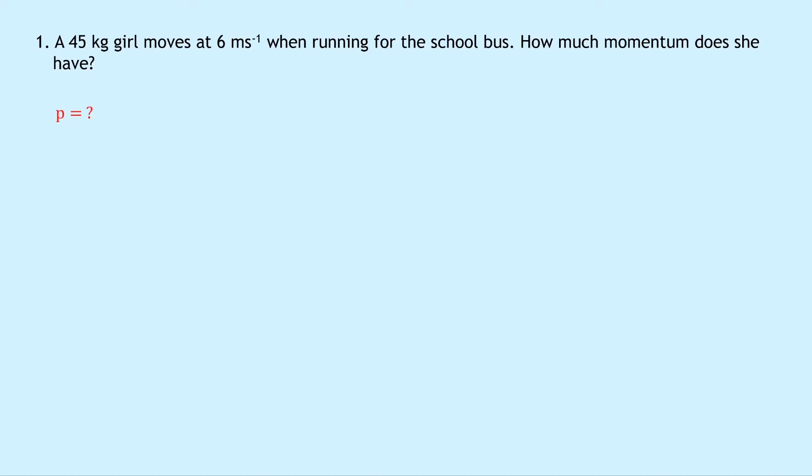Well, writing down what we know from the question, we know the momentum is what we're trying to find. We know the mass of the girl is 45 kilograms and the velocity of the girl is 6 meters per second.